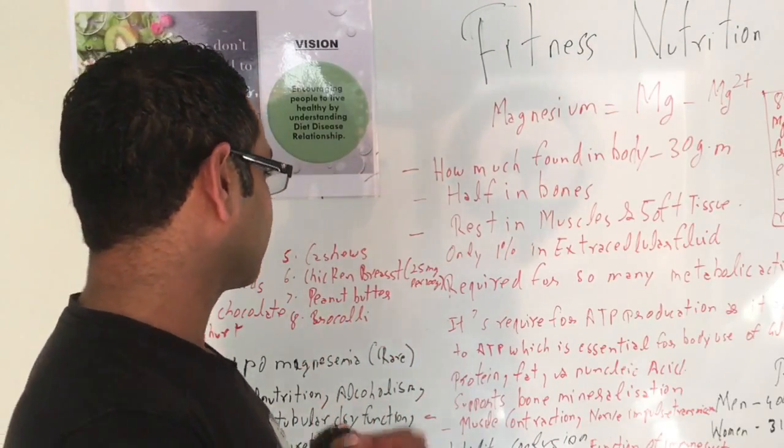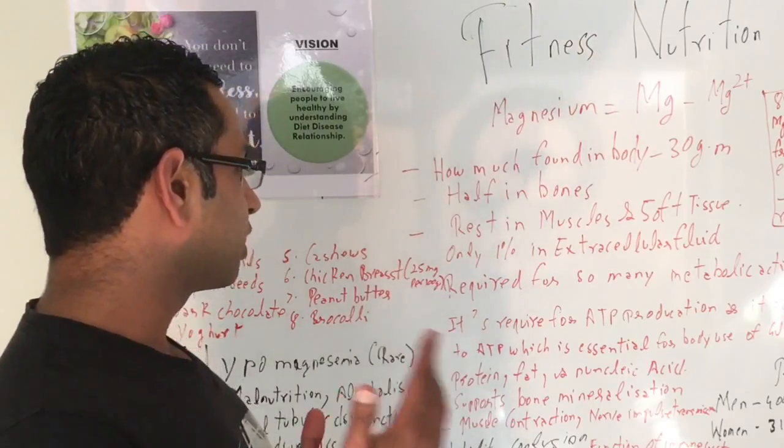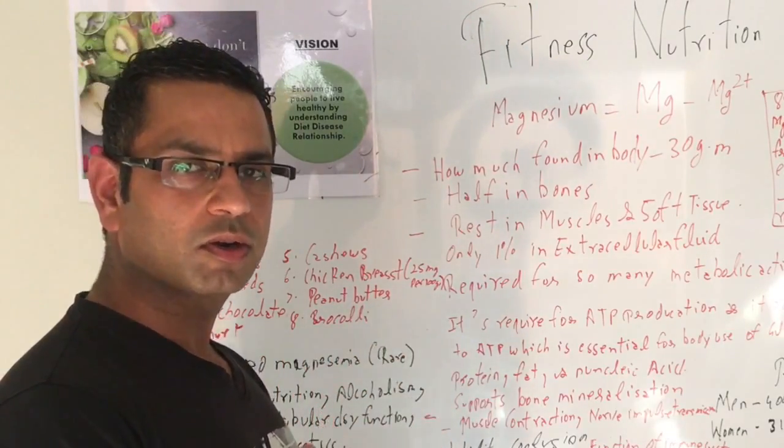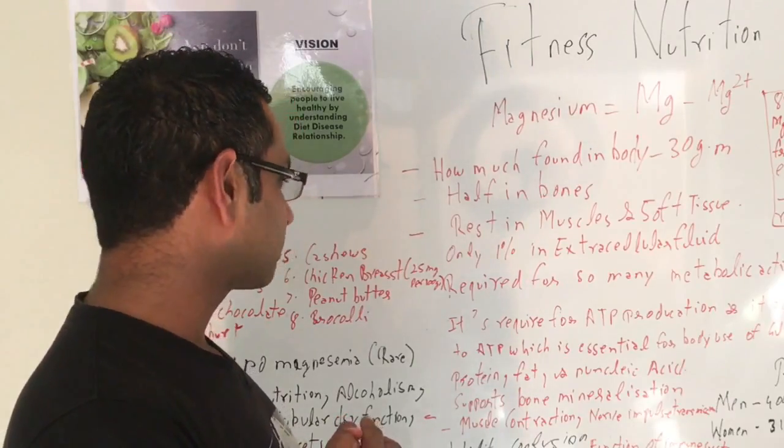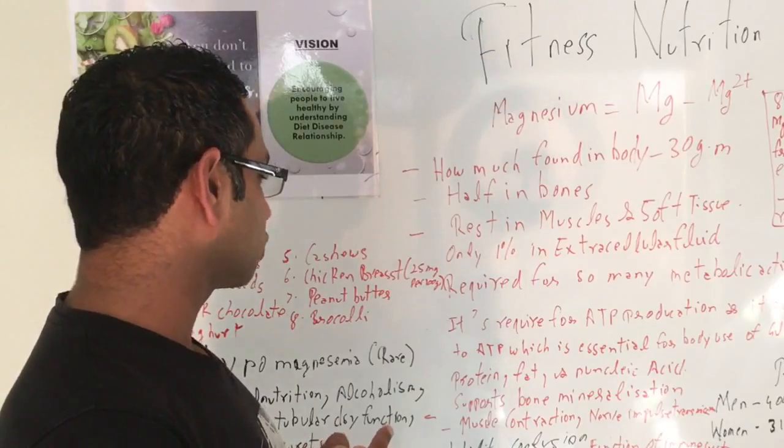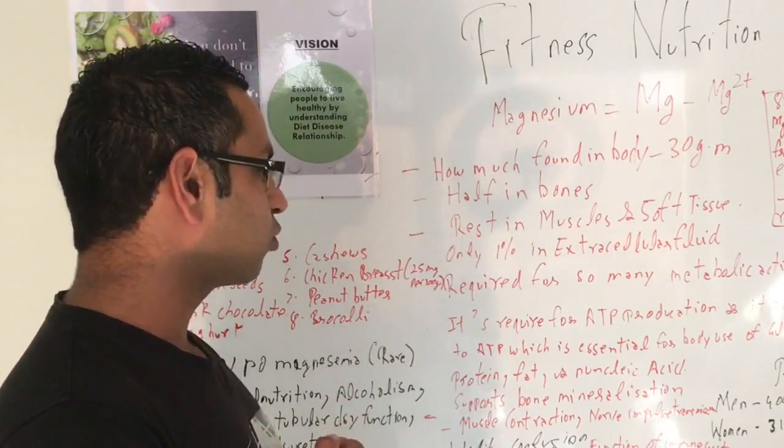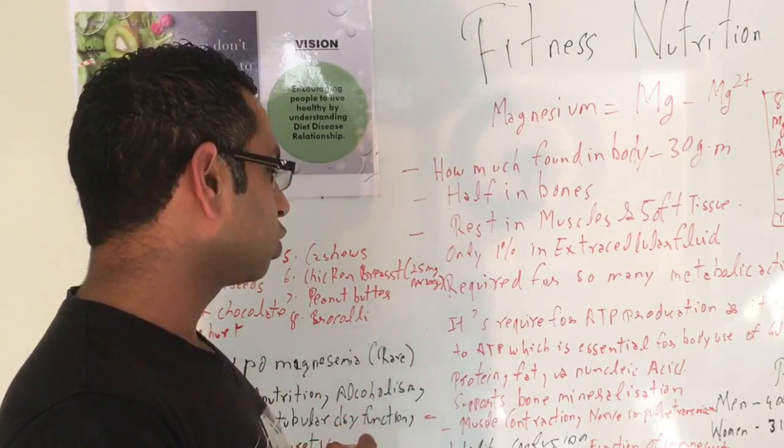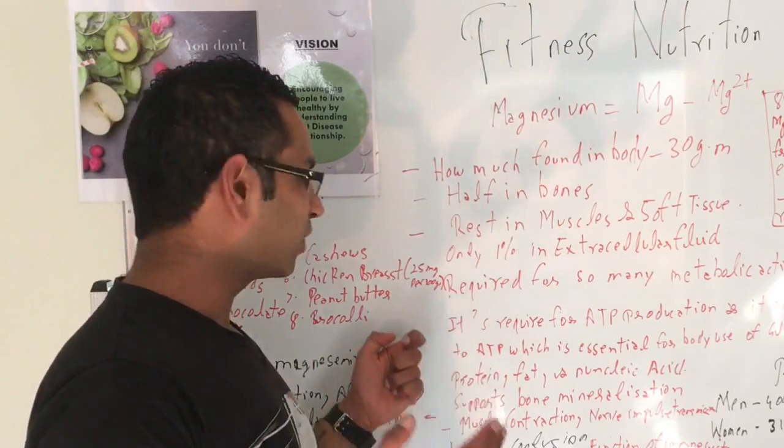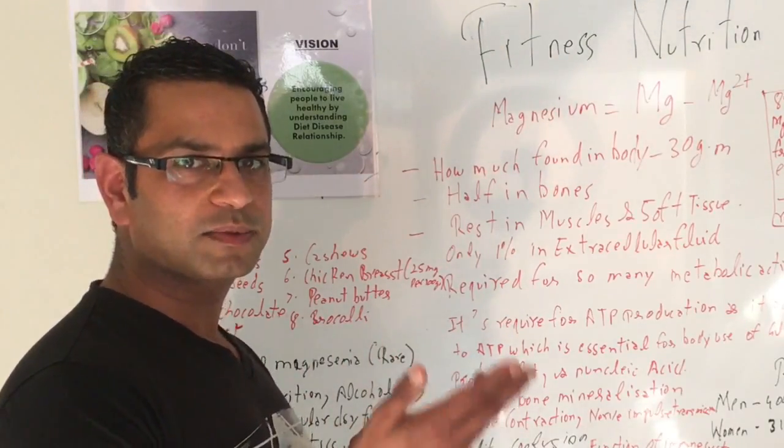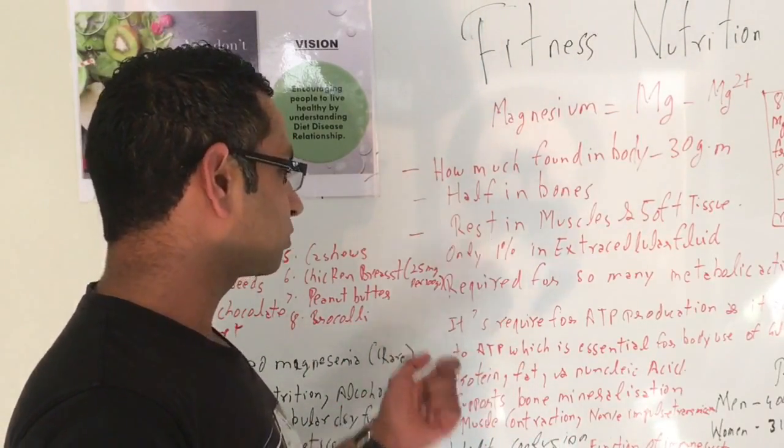So what are the functions of magnesium? First of all, it's required for so many metabolic activities in the body - it's required for more than 300 different enzymes. It's required for ATP production as it adds the last phosphate to ADP, which is essential for the body's use of glucose and synthesis of protein, fat, and nucleic acid. For people who don't know what ADP is - everything we eat, whether fat, carbs, or protein, the body gives us energy in the form of ATP.